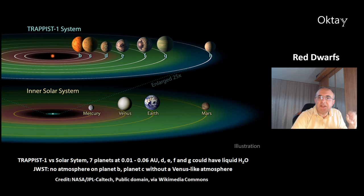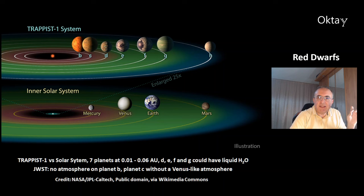This is a comparison of the TRAPPIST-1 system, enlarged at the top by 25 times, compared to the solar system. You can see the seven planets ranging from 0.01 to 0.06 AU. The four inner planets — D, E, F, and G — could have liquid water on their surface. The James Webb Space Telescope has already found that there is no atmosphere on planet B, and that planet C does not have a Venus-like atmosphere.